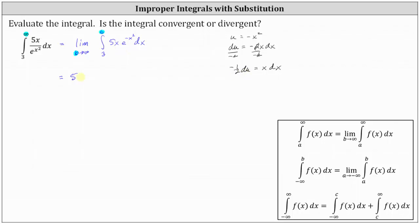Let's also factor out the negative one-half. And then we have the limit as b approaches infinity of the integral. Now we need to be careful here — the limits of integration from three to b are x values, not u values. So for the lower limit, let's write x equals three, and for the upper limit, let's write x equals b. This is just emphasizing these are x values, not u values.